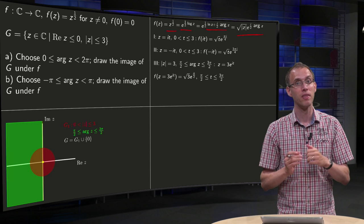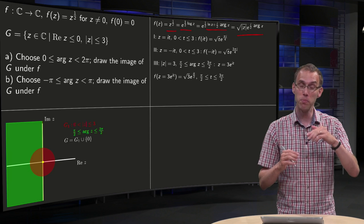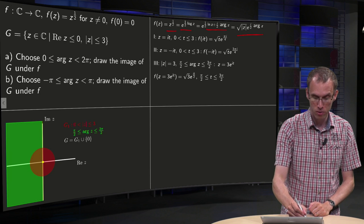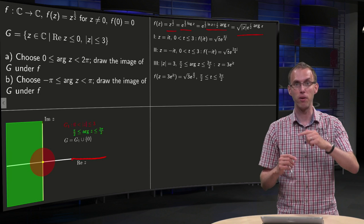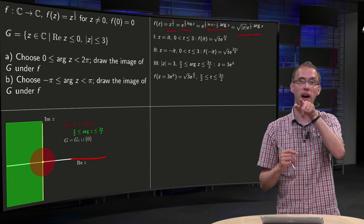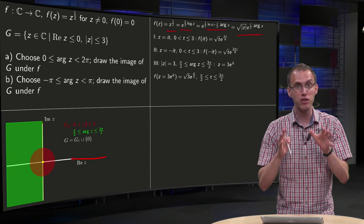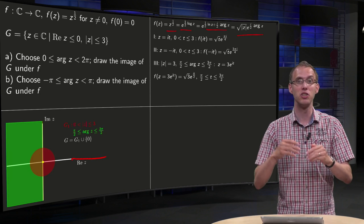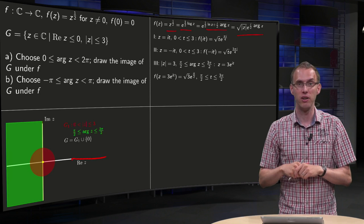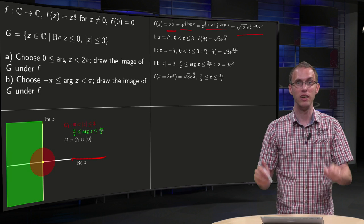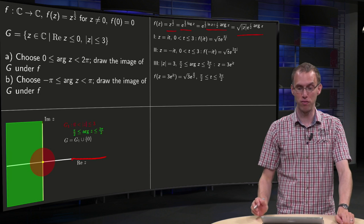Notice here, by the way, that we don't have a jump in the argument along the real axis, from zero to two pi, but we haven't defined a branch cut or whatever, the function is now just discontinuous if you cross the real axis, so there's in this case no branch cut involved.